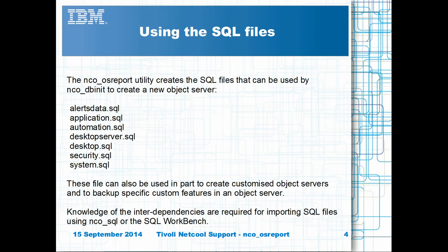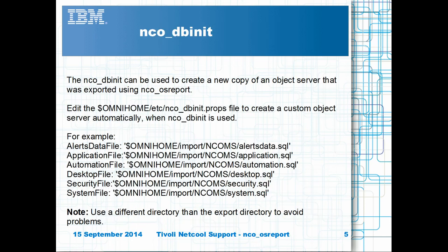If you export the SQL files, these files can be used to create a new object server. Or else, extracts from the SQL files can be used to modify an existing object server. To create a new copy of the exported object server, add the full path to the exported files into the nco_dbinit.props property file as shown.